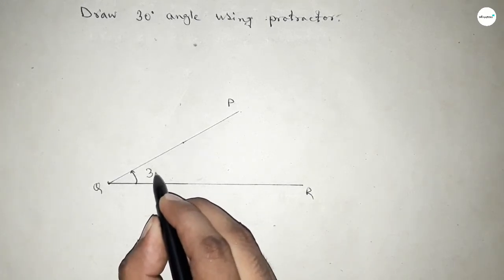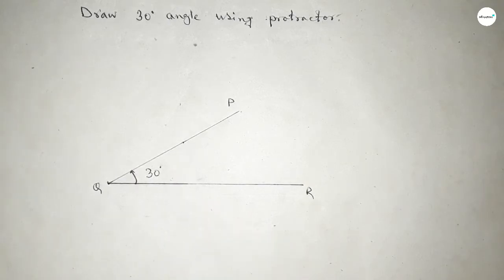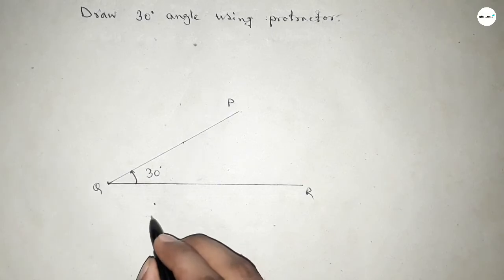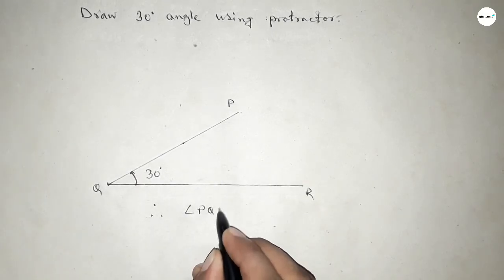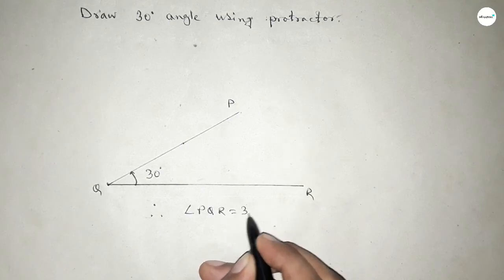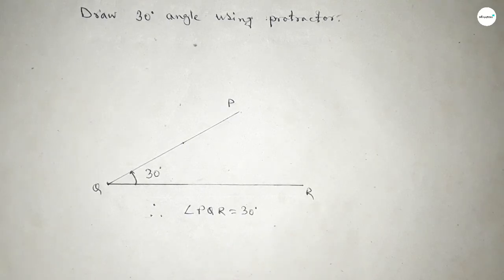Therefore, angle PQR is a 30 degree angle, so angle PQR equal to 30 degrees. That's all, thanks for watching. If this video is helpful to you, then please share it with your friends.